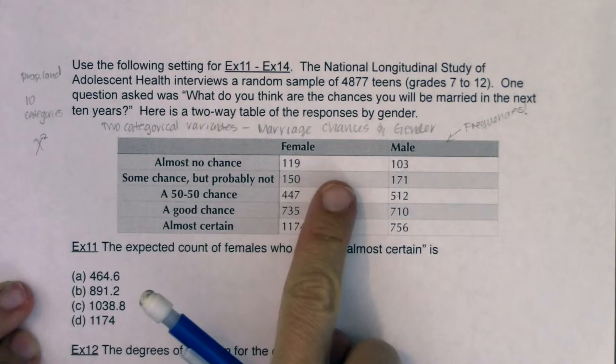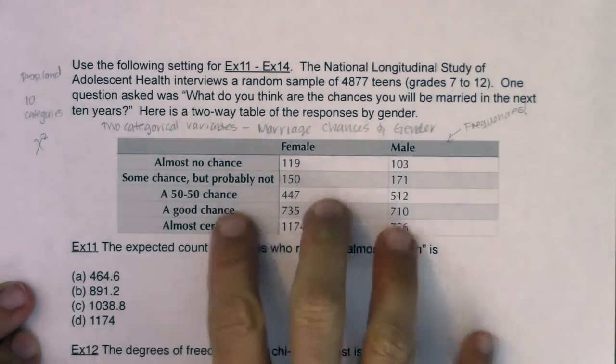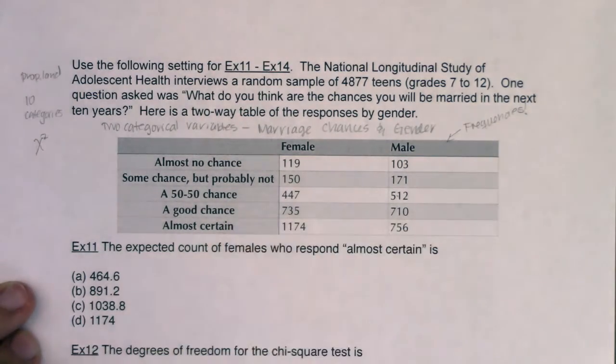Now, because I have two categorical variables, this would be, if they ask me to run the hypothesis test, it's going to be a test for independence. So let's see what the questions are.